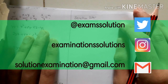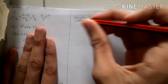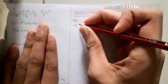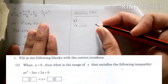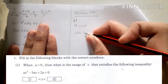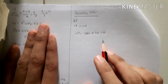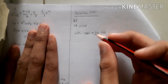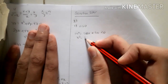Hello everyone, welcome to this Shenshu 2015 Part 1. We're going to discuss Part 1, starting with number 1. When a is greater than 0, what is the range of x that satisfies the inequality ax squared minus 3ax plus 2a less than 0? We can simplify by eliminating a since it is greater than 0.